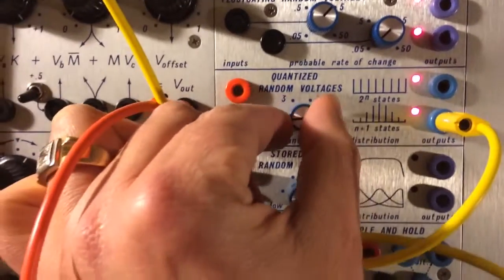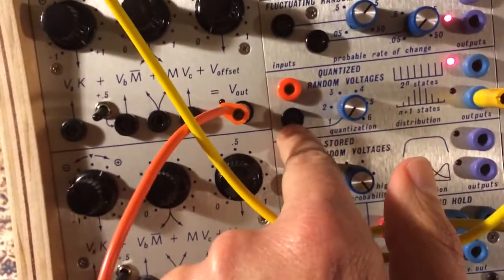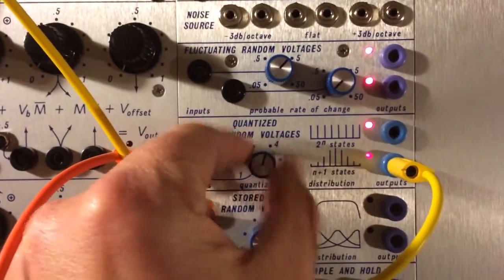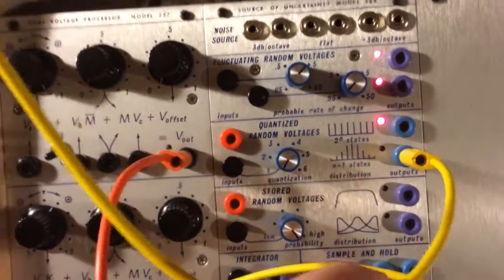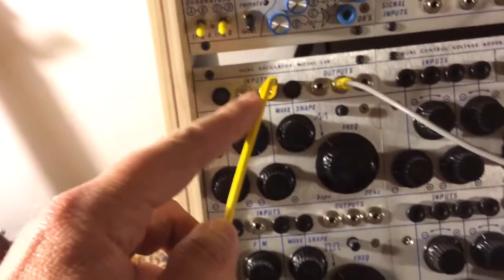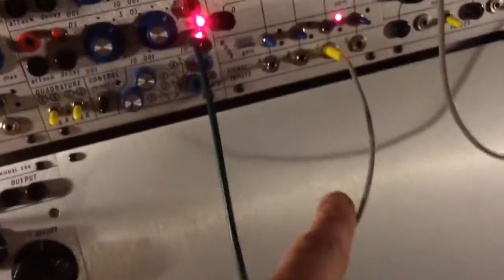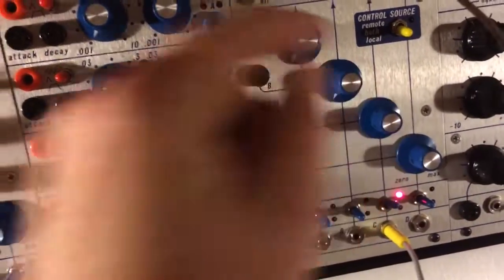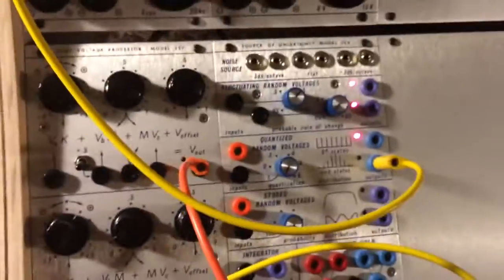So what that means is you could use the CV input or the quantized amount, and you can see the light's changing, which means the voltages or random voltages are being spit out. So let's put it into a 258. 258 is just going to be on. Watch, listen.